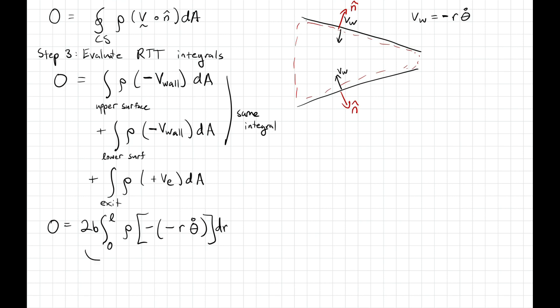So rho minus V wall times dA becomes rho times minus of minus R theta dot. And if you track all that out, the minus signs cancel, integrated over R from zero to L. So that gives the value of rho times B times L squared times theta dot. And then we add to that the value of the integral at the exit, which just turns out to be rho times V exit times A exit.